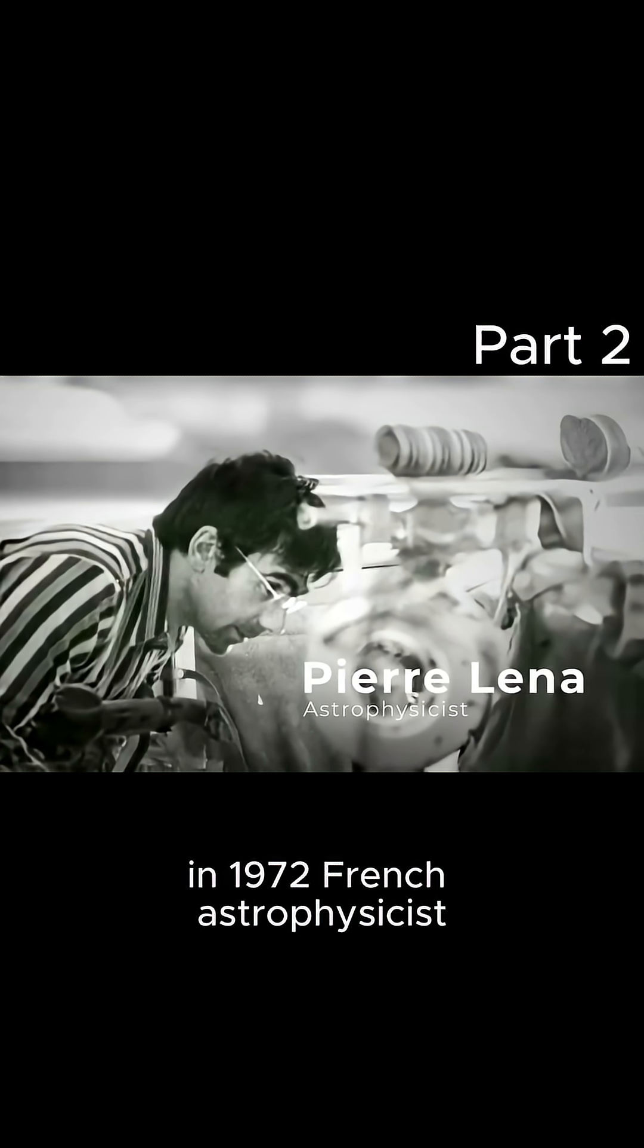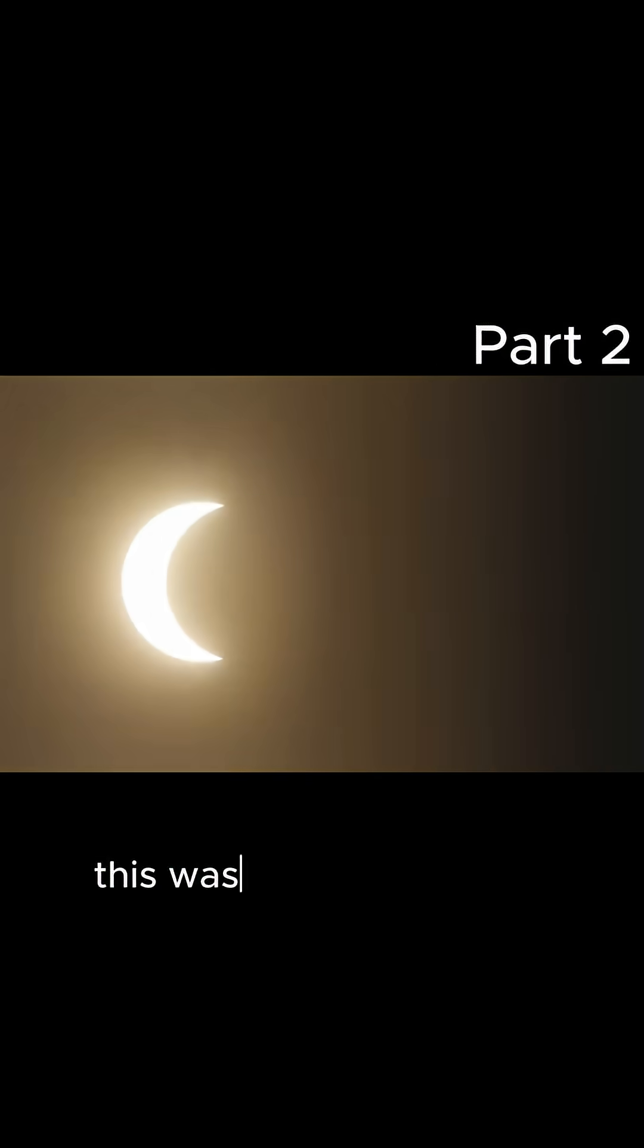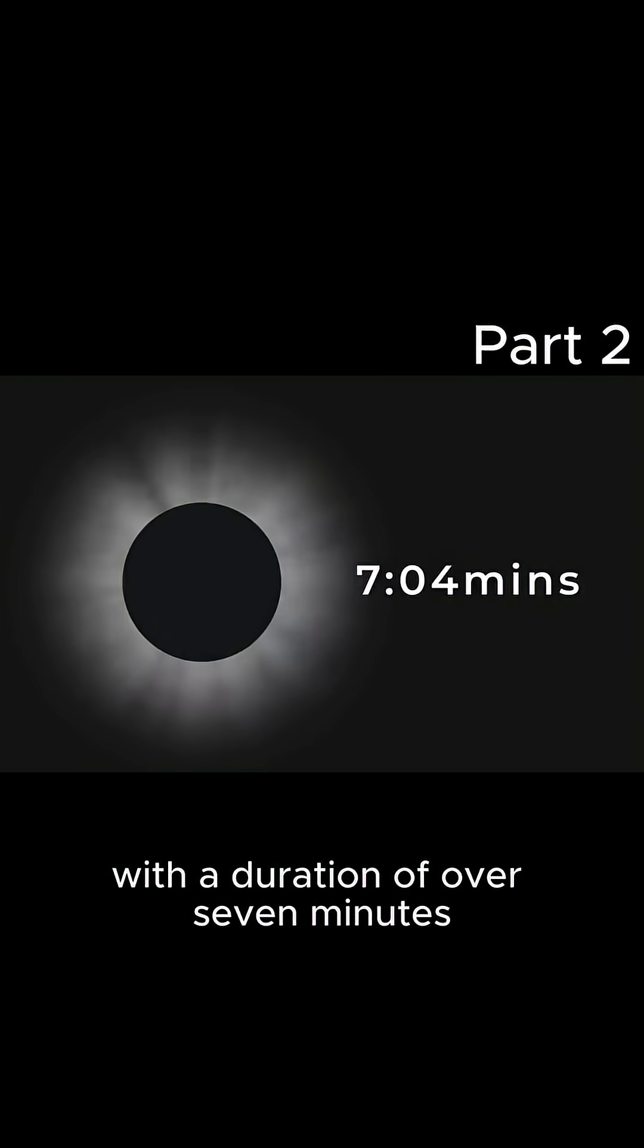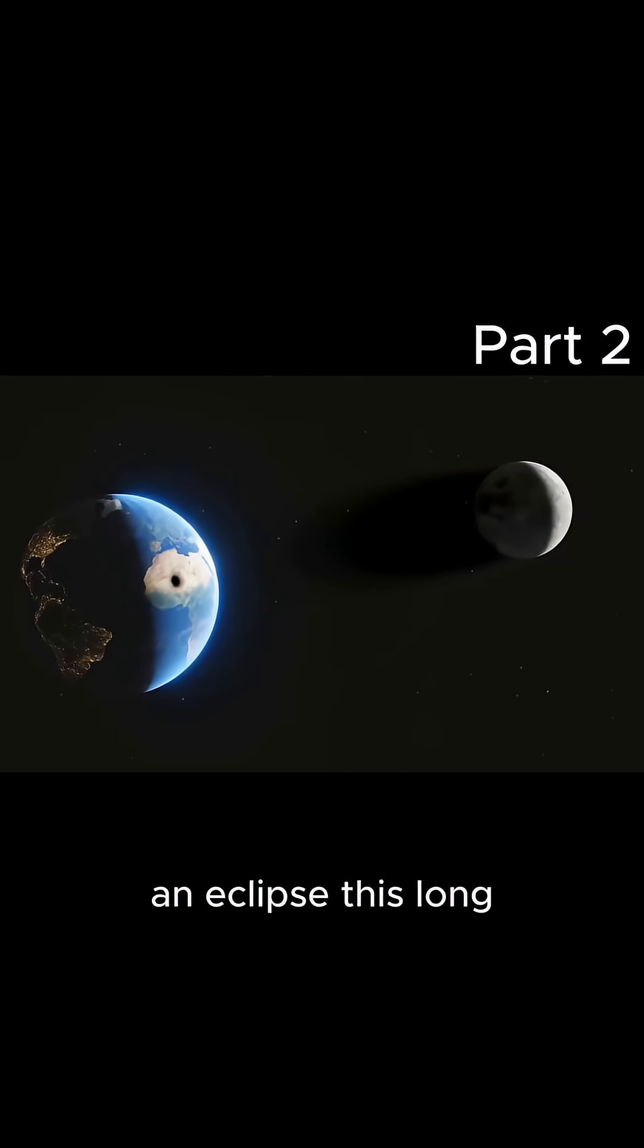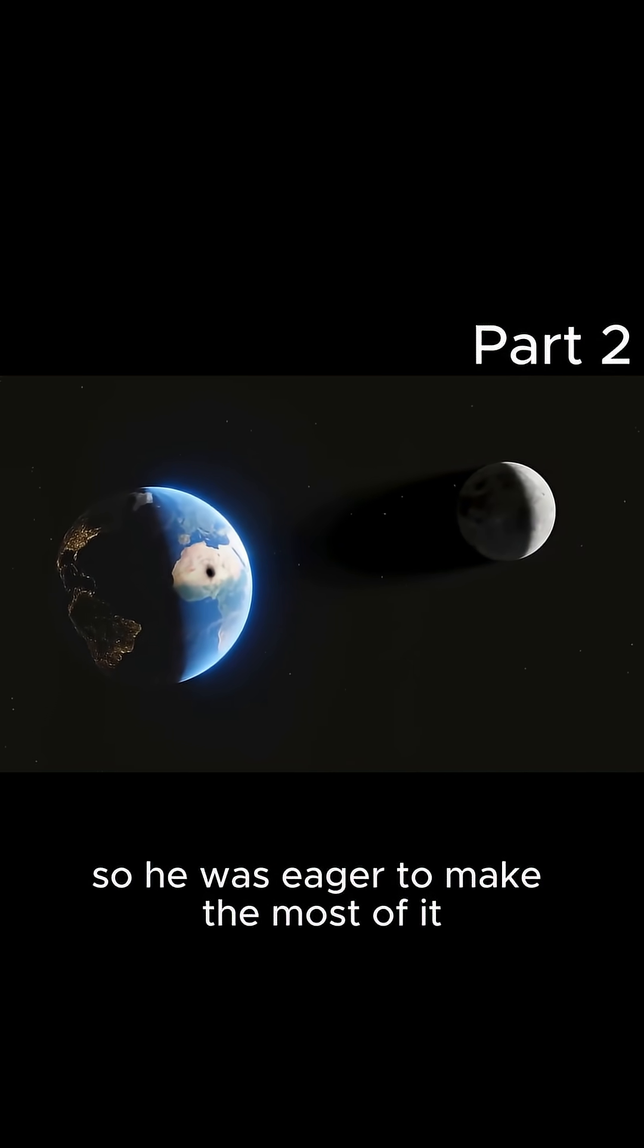In 1972, French astrophysicist Pierre Léna began preparing for the upcoming eclipse. This was to be one of the longest in history, with a duration of over seven minutes. An eclipse this long wouldn't happen for another 200 years, so he was eager to make the most of it.